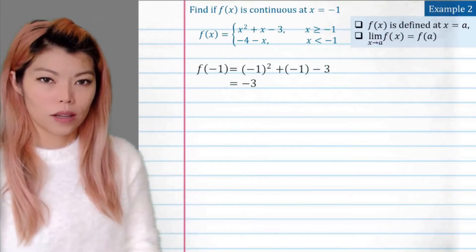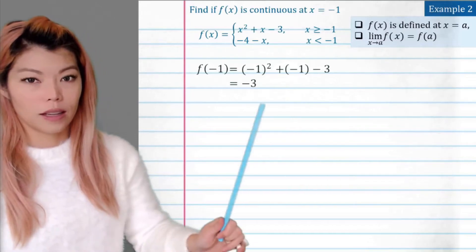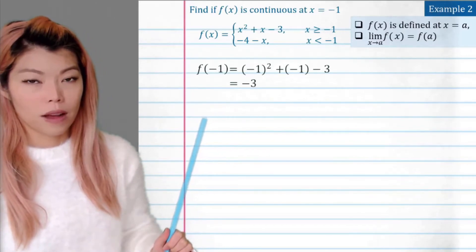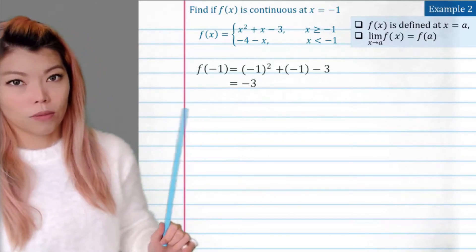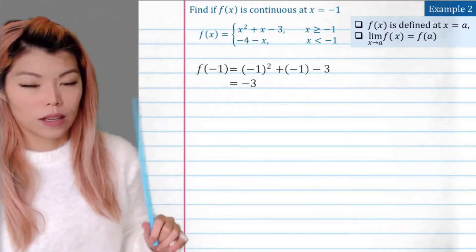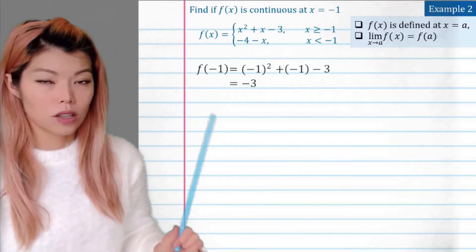Let's do the second one. Does the limit exist? How do we do that? We look at if there is a y value approaching there from the left and from the right. So if there's a limit from the left and the right, and if they match, then we have a limit.